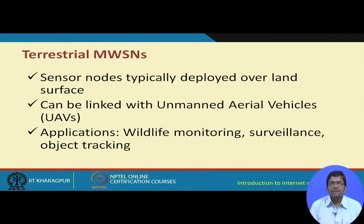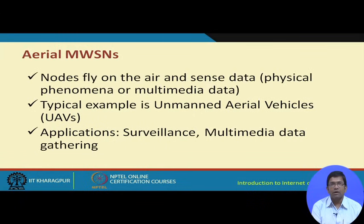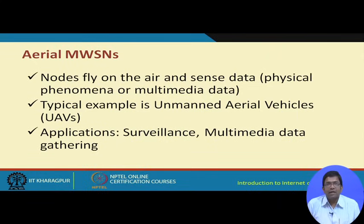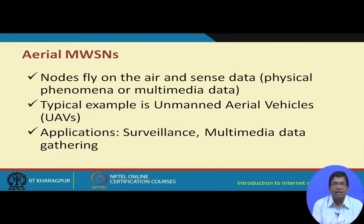Terrestrial wireless mobile sensor networks have nodes deployed over land, which can be linked with autonomous unmanned aerial vehicles (UAVs). Applications include wildlife monitoring, surveillance, and object tracking. In the aerial version, the nodes fly, sense, and form a network through which data are sent to a surface station. Typical examples include unmanned aerial vehicles fitted with sensors for surveillance and multimedia data gathering.